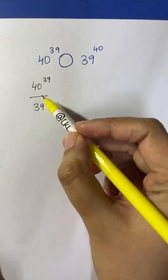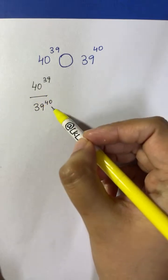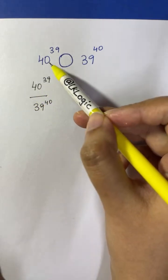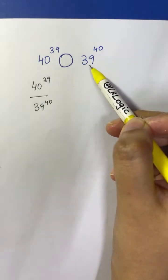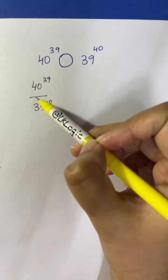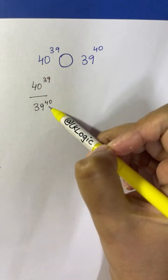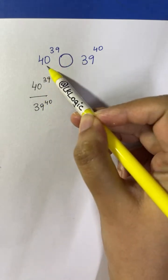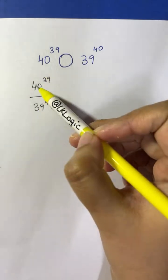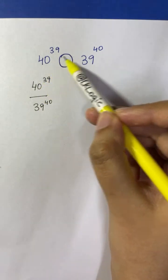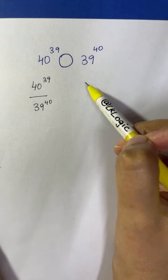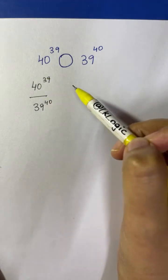Whenever you have this term, if this term is greater than 1, then 40^39 is greater than 39^40. If this fraction equals 1, then they are equal. And if this is lesser than 1, then 40^39 is less than 39^40. This is how we are going to compare this fraction to 1.